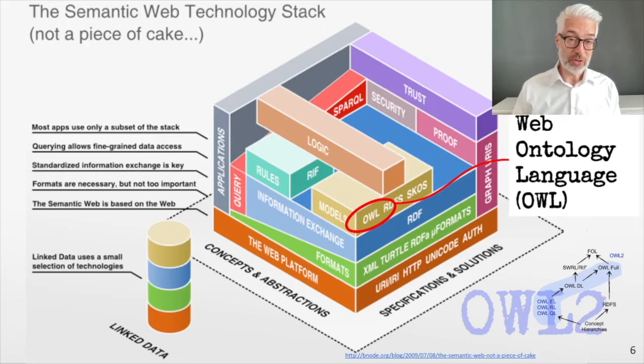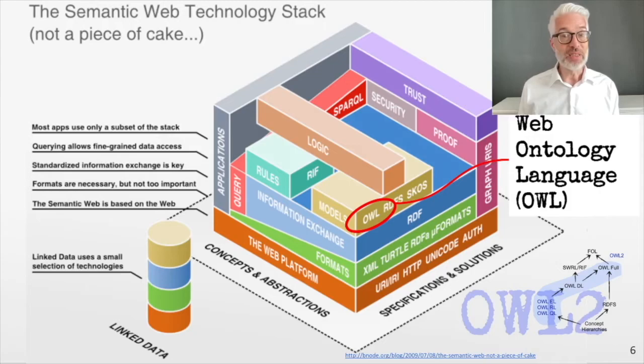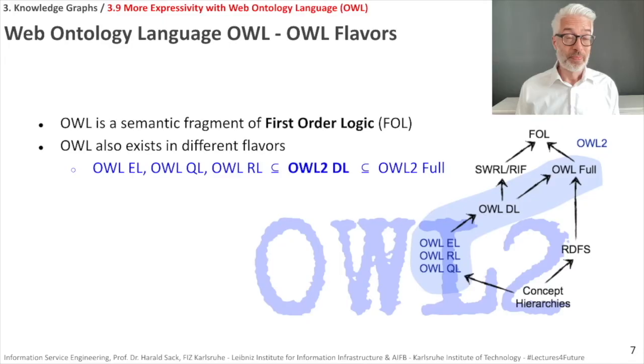Don't be confused that Web Ontology Language would not give the same acronym as WOL — OWL simply sounds better than WOL. There might be other anecdotes and reasons, but you can look them up. What is OWL? OWL is a semantic fragment of first-order logic. As I told you, now we are dealing with logic.